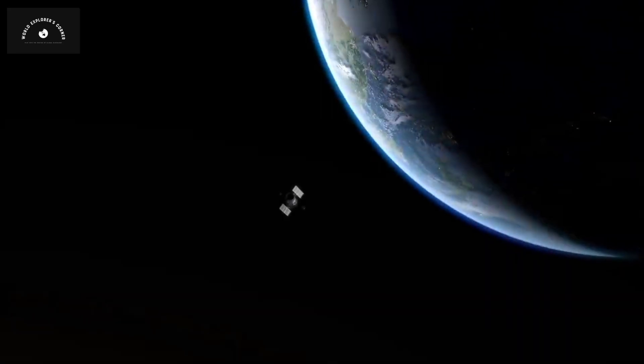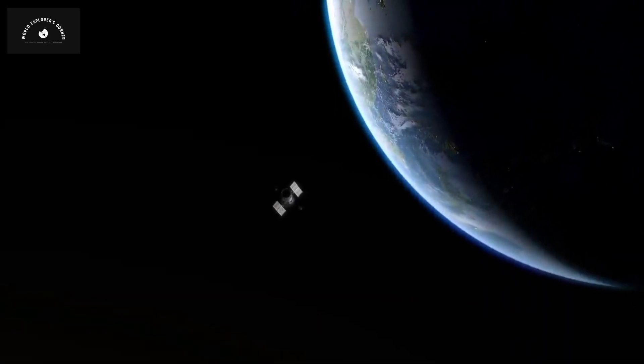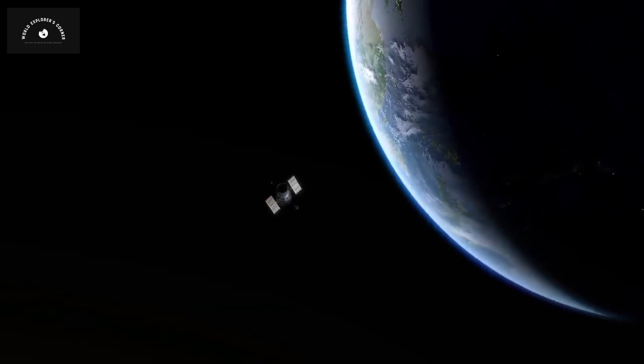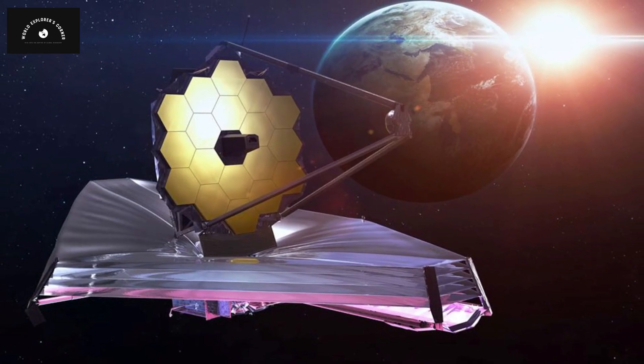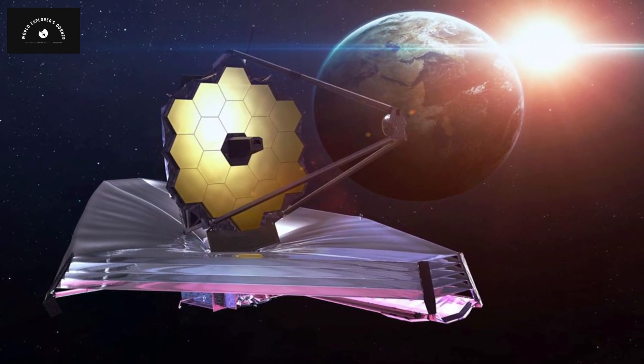At this point, the James Webb Space Telescope is observing our universe in the infrared light spectrum. This is why it is crucial to keep it away from the sun's light and heat.